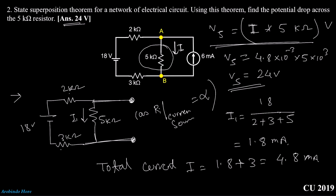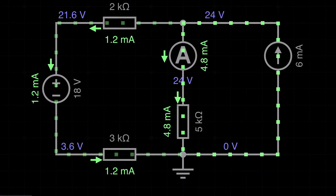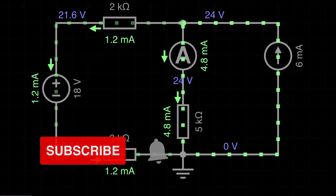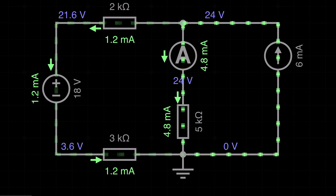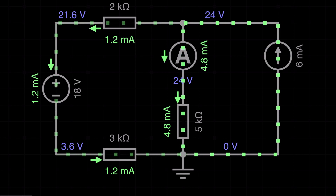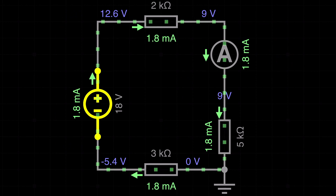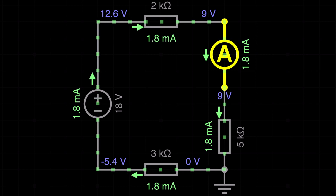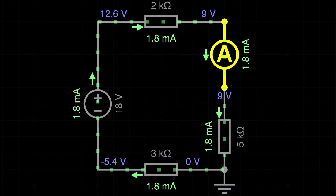Let's prove the superposition theorem using the simulation. The circuit diagram shows a current of 4.8 milliampere and a voltage of 24 volts — exactly matching our calculation. To prove superposition, in the first circuit we use only the voltage source and replace the current source by an open circuit. With the 18 volt voltage source only, the current through the 5 kilo ohm resistance is 1.8 milliampere — exactly matching our calculation result.